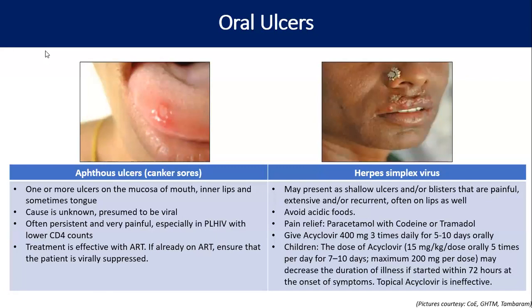In herpes simplex, you will find blister-like ulcers, usually involving the lips as well. In aphthous ulcers, they are usually within the mucosa inside the mouth. The cause of aphthous ulcer is not fully known but is presumed to be viral; low CD4 count is usually associated, though PLHIV with high CD4 count can also have them. Treatment is effective with ART — with restoration of CD4 count, the ulcers resolve.